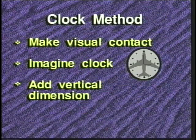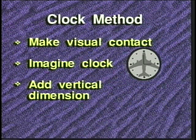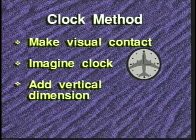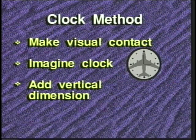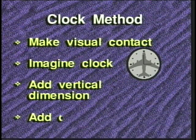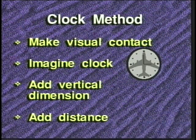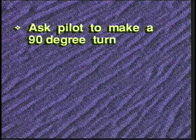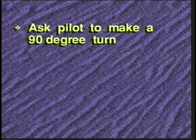Add the vertical dimension of high, low, or even, and the pilot will be able to narrow the scanning area even further. Add distance. It is difficult to determine the direction of flight when an aircraft is at a distance, so ask the pilot to make a 90-degree turn.